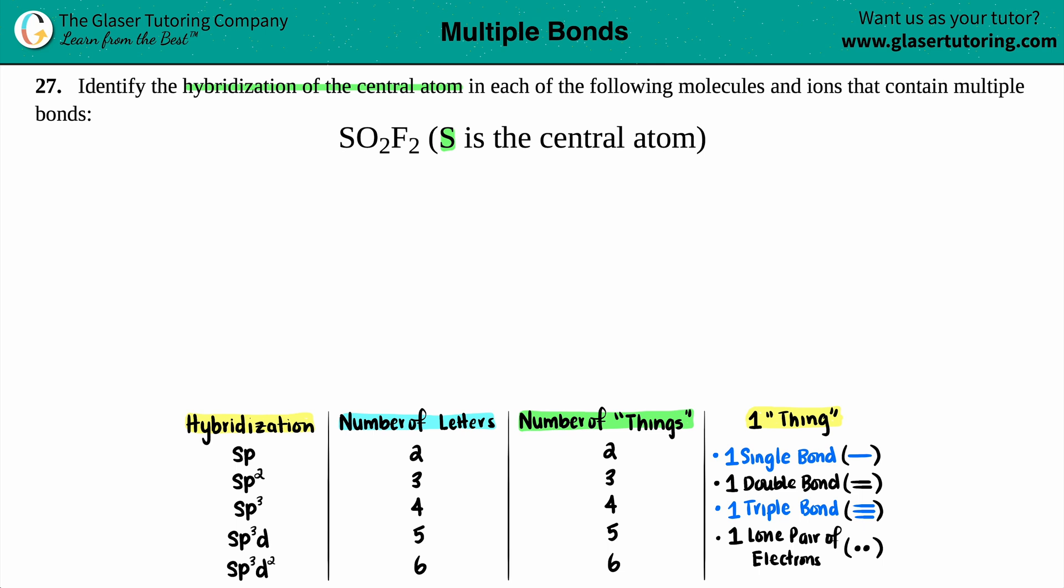They're telling us that the sulfur is the central atom. So sulfur has got to be in the middle, and all the other elements are attached to that sulfur. So I got a total of two oxygens and two fluorines that's going to be bound to the sulfur. So maybe I'll put one oxygen here, one oxygen here, the F, and the F.